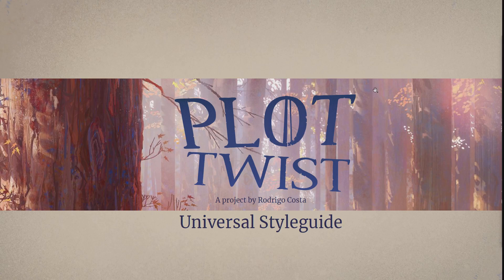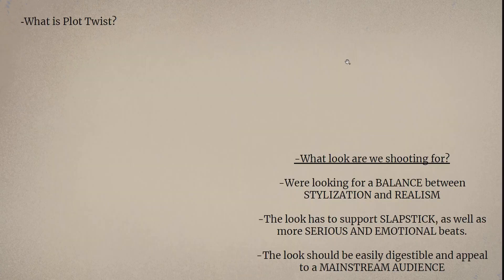So I set out to do a style guide, basically trying to define what shall make this project stand out. First of all, try to write down what the project is all about, what you're shooting for, and try to formulate it in a couple of very simple sentences. It's looking for a balance between stylization and realism. The look has to support slapstick — the classical Cloudy with a Chance of Meatballs stuff — as well as more serious and emotional beats as you would find in a Disney movie. The look should be easily digestible and appeal to a mainstream audience. It's not supposed to be a cool indie film for festivals — it's supposed to be a commercial project.